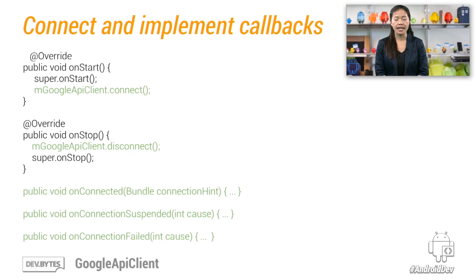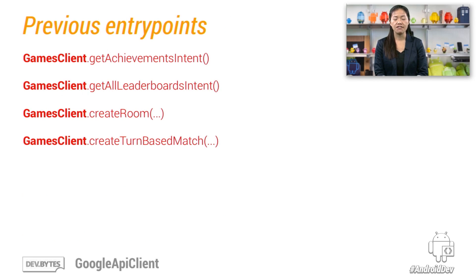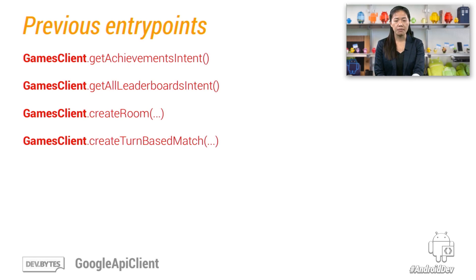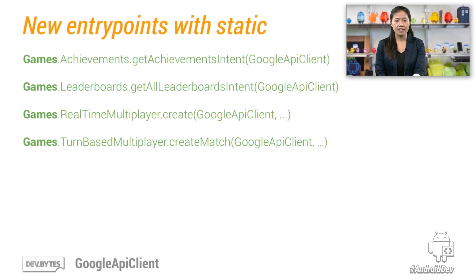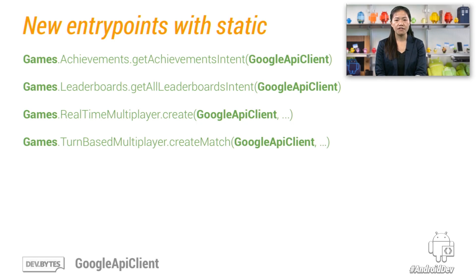After you have a connected Google API client, how do you access the methods in the API? We can look at the case of games as an example. The previous model involves calling into the games client as the main entry point to get things like achievements and leaderboards, but that is now being deprecated. We can't call it on Google API client because it's not coupled to any service, and we don't want it to know about all the methods that each service could potentially provide. Instead, the answer is to use the new entry points that we've created. In the games case, the main entry point is now the Games class, which offers static methods to read or write data. You can access game achievements through the Games.Achievements class, or leaderboards through the Games.Leaderboards class, and so on. Every time you make a call to an API, you must pass the Google API client object as well. This serves as a reminder that you need an open connection to the Google Play Services app in order for the request to be handled.